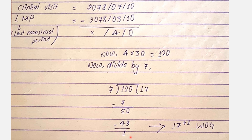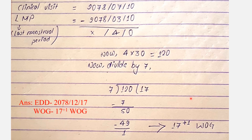120 divided by 7 gives us 17 weeks and 1 day. So week of gestation is 17 plus 1, meaning 17 weeks and 1 day. EDT with LMP 2078-12-17 adding 9 months and 7 days gives the expected date of delivery.